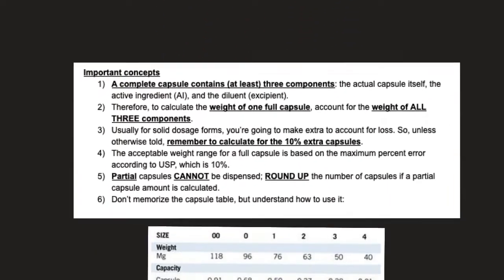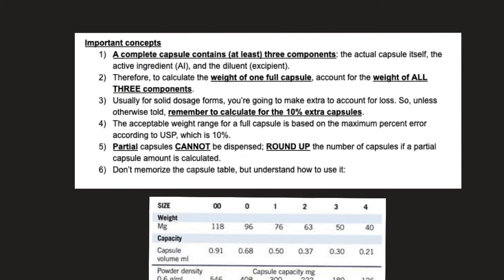A few important concepts before I go into the calculation example. Important concept number one: a complete capsule contains at least three components — the actual capsule itself, or the capsule shell; the active ingredient; and the diluent, also called the excipient. Therefore, to calculate the weight of one full capsule, you're going to account for the weight of all three components.